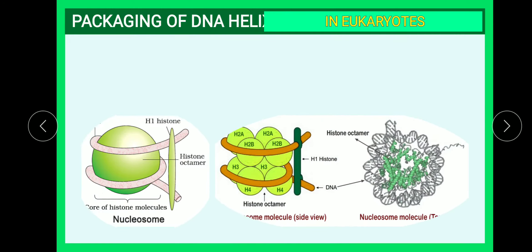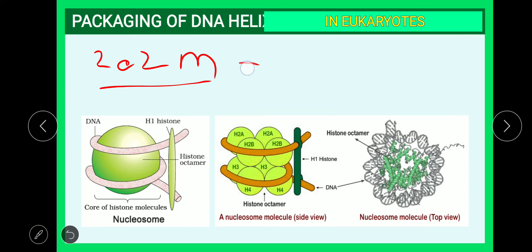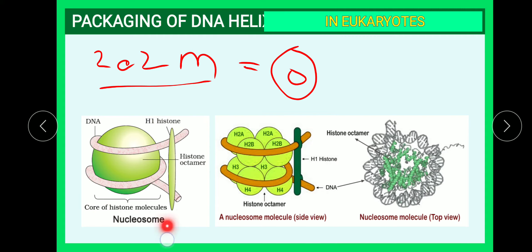In eukaryotic packaging, packing 2.2 meters of DNA into a small cell nucleus is achieved mainly through the nucleosome structure. The nucleosome is formed of histone proteins — specifically, it is an octameric structure made up of four histone proteins: H2A, H2B, H3, and H4, with four on each side totaling eight proteins.